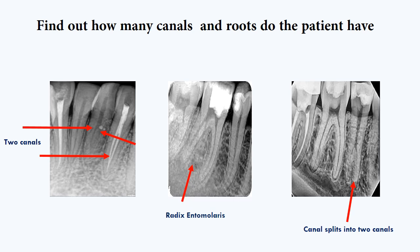In the next picture, you'll see that the tooth has an extra root — this case is called radix entomolaris. That's why X-ray is very important, because without it we couldn't see this extra root. On the third picture, you'll see that the premolar has a deep canal split which divides into two canals.